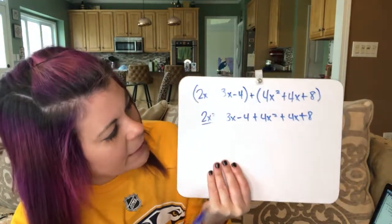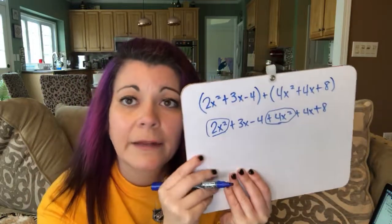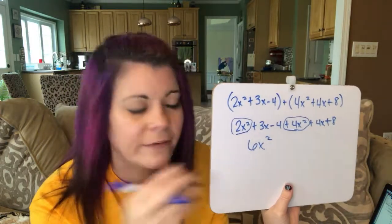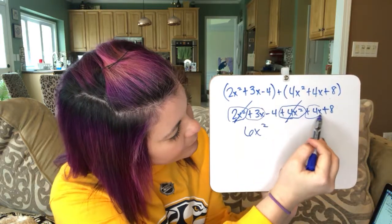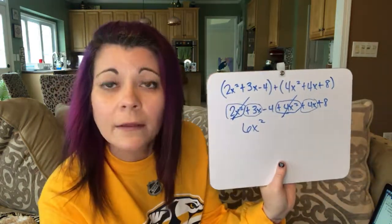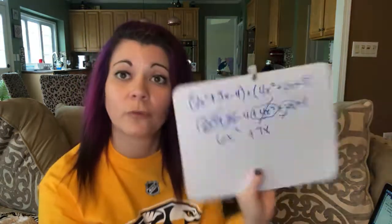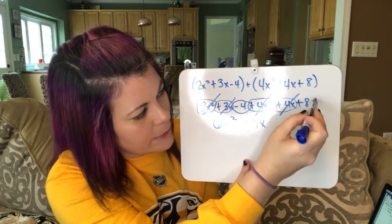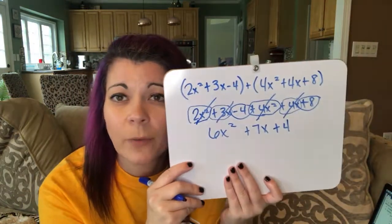Now we can combine like terms. I'm looking for something that has an x squared. We take the operation in front of it, so this would be 2x squared plus 4x squared. Since they have the same variable, we add the coefficients: 2 plus 4 is 6, so we have 6x squared. Next, plus 3x and plus 4x gives us positive 3 plus 4 is 7, so plus 7x. Then negative 4 plus 8 — we take the operation in front — so negative 4 plus 8 is a positive 4. So we've added those polynomials to get 6x squared plus 7x plus 4.